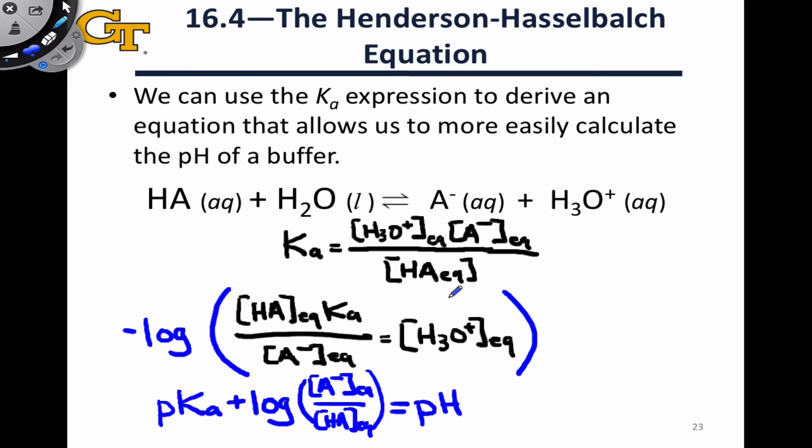This equation in blue at the bottom of the slide is known as the Henderson-Hasselbalch equation, and really we can see that we started from the equilibrium expression for Ka, so this equation and this equation are equivalent to one another, it's just that one is, as I like to call it, in p-land, in negative log land, while the other one is just in normal mathematics land. The beauty of this equation at the bottom of the slide is that it allows us to go right from concentrations of the conjugate base, the acid, and a given pKa to the pH.